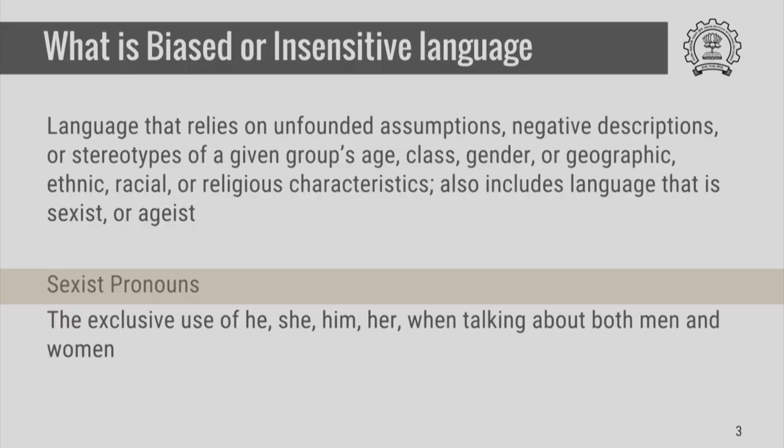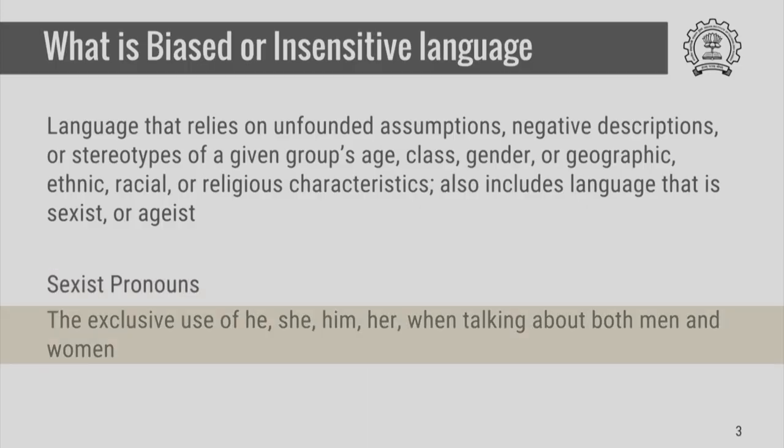One example of insensitive or biased language is with reference to sexist pronouns. For example, the exclusive use of 'he', 'him' and so on when talking about both men and women — that is the use of masculine pronouns to refer to both men and women or to refer to all human beings including the third gender — is considered to be sexist and such language is not acceptable in academic, professional, or scientific communication.